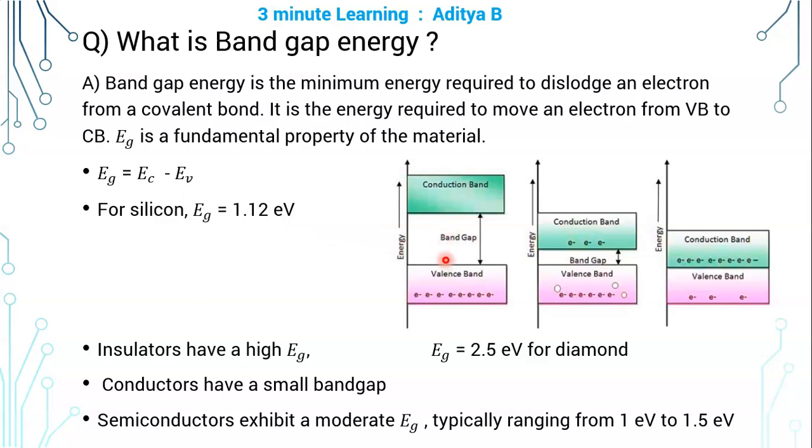Depending on this band gap energy, materials are classified as insulators, conductors, and semiconductors. If you give EG energy, then only an electron in the valence band can go into the conduction band.